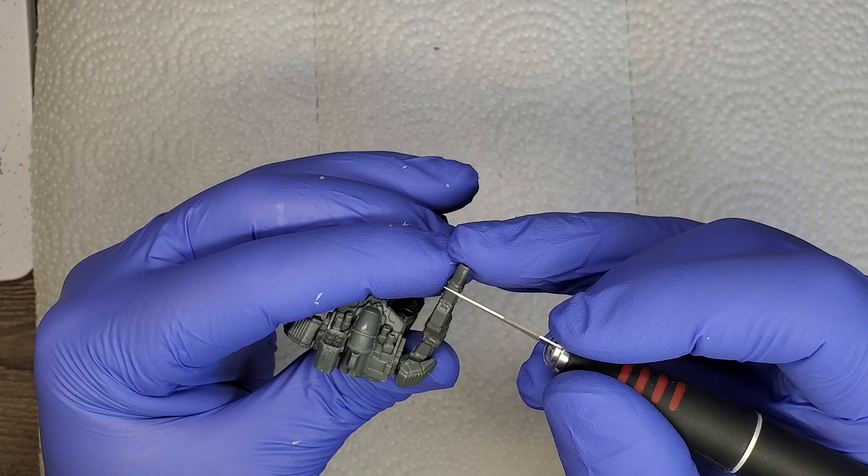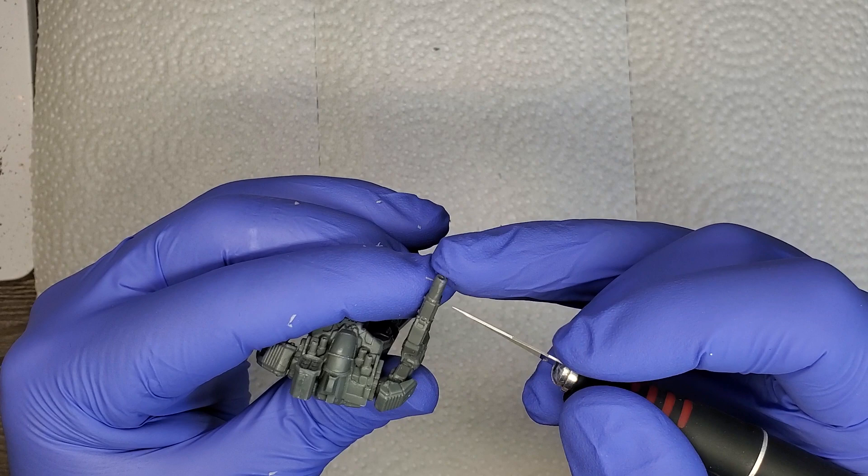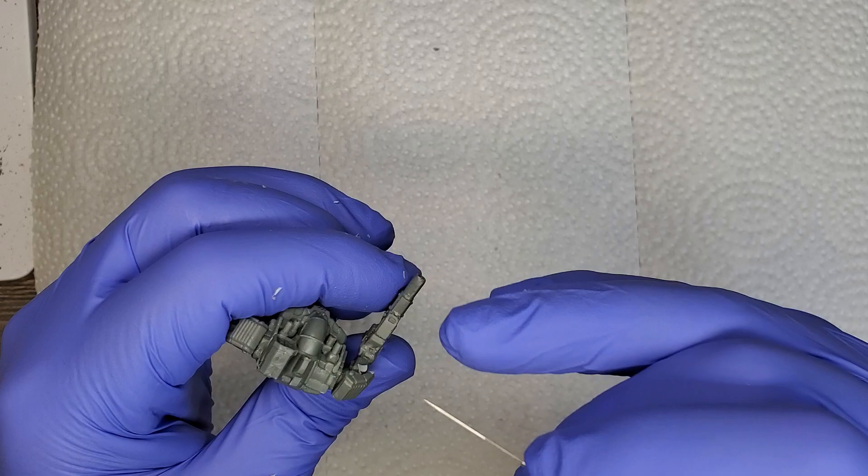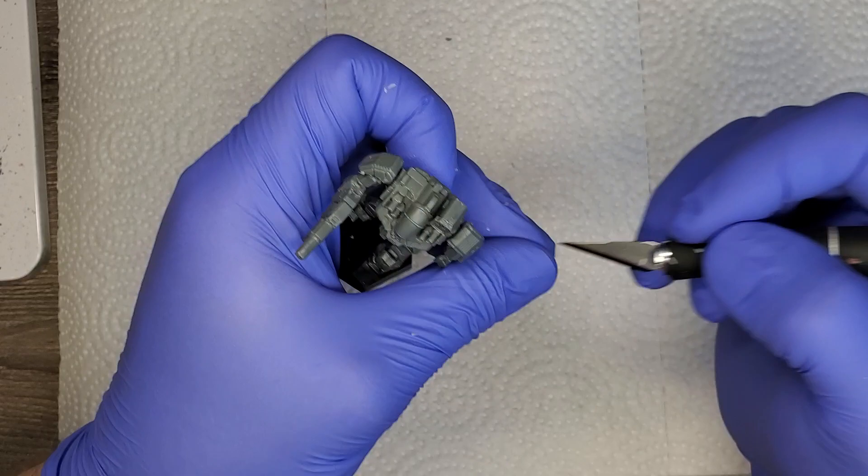Yeah, a lot of times with other plastics, you might just dig your knife in, scrape, scrape, kind of like that, and it will remove the mold line fairly nicely. But on these plastics, very similar to War Machine plastics, War Machine Hordes, it just does not pull very well. The blade kind of skips, skips and grinds down the length of whatever you're cutting.